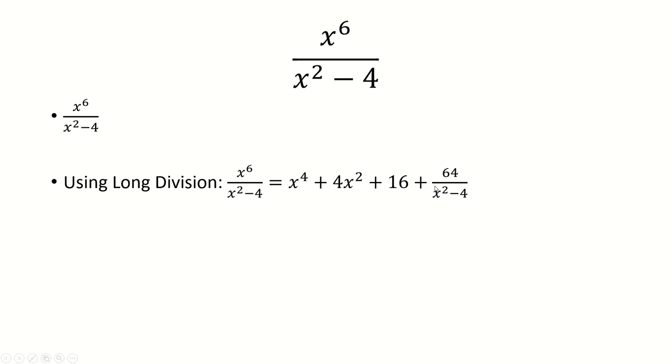So now we'll work with the 64 over x squared minus 4 and use partial fraction decomposition. The two roots are x minus 2 and x plus 2, so we have A over that and B over that.